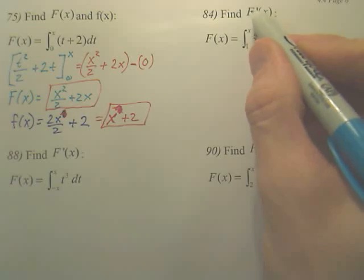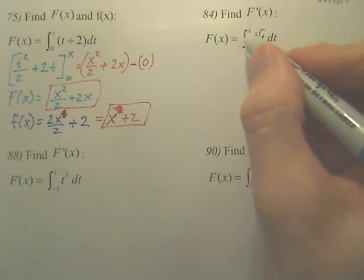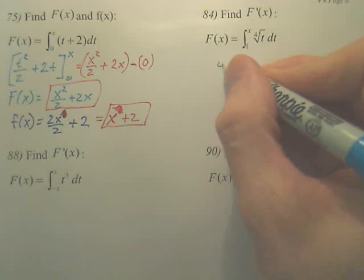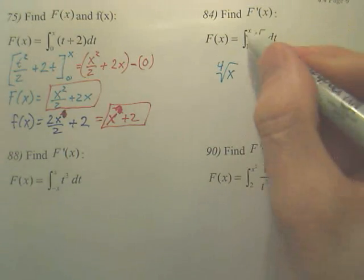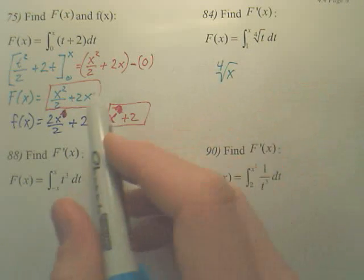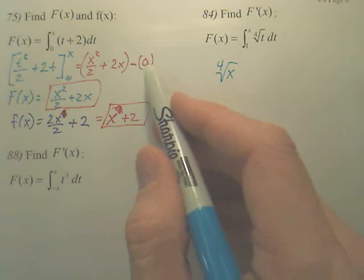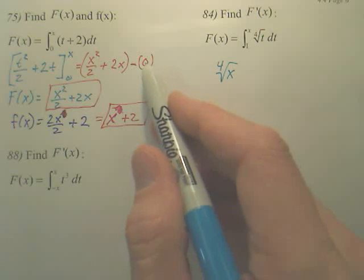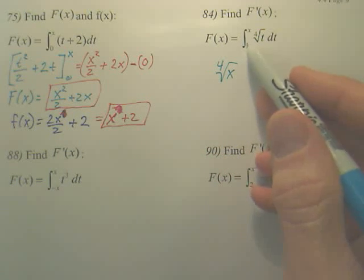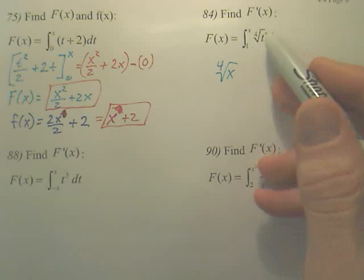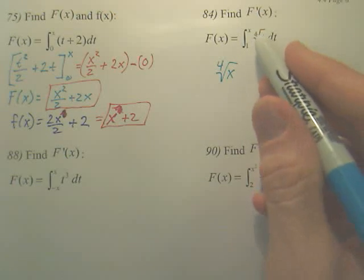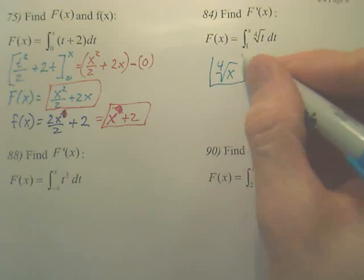So basically, if we want to derive this, if we're going to derive both sides, when you derive this, your answer is simply going to be the fourth root of x. You basically plug the x into here. When you plug in 1, you will get some sort of constant here. But when you derive a constant, this constant disappears. So you really don't need to worry about this 1 down here, as long as this is a constant and this is an x. All you do when you derive this, you basically plug that value in, and that is your answer.